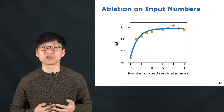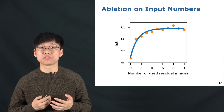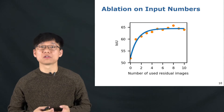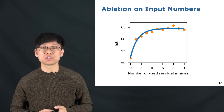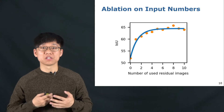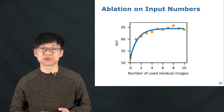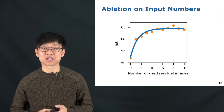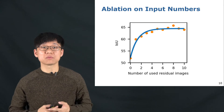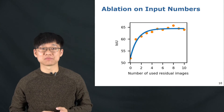Here I show some ablation studies on our methods. This figure shows the ablation study on the number of residual images used for moving object segmentation. We can see that when only using one residual image, it already achieves a big improvement in moving object segmentation performance. While adding more residual images improves performance further, after eight frames the improvement is not that significant. Therefore, in real applications, we only use residual images generated from the past eight frames as the input.